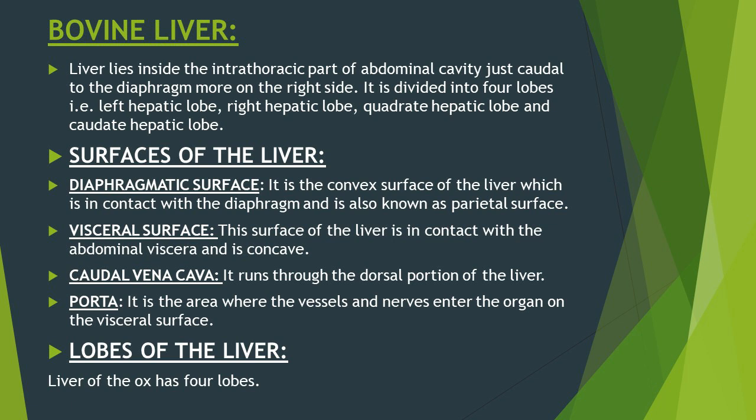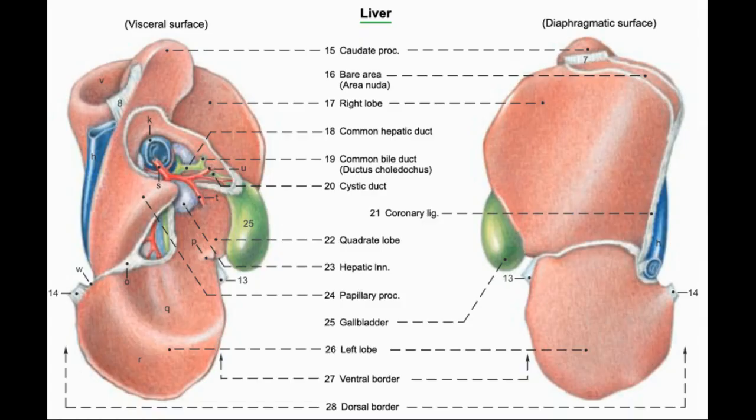There are two surfaces of the liver: diaphragmatic surface and visceral surface. The diaphragmatic surface is the convex surface in contact with the diaphragm, also known as parietal surface. The visceral surface is in contact with the abdominal viscera and is concave in shape. On the visceral surface, the area where blood vessels and nerves enter the liver is called porta.